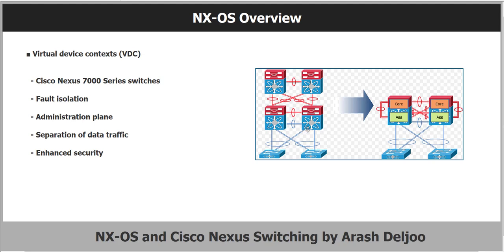Here you can see that instead of using two physical switches in the core layer and two physical switches in the distribution layer, we can use only two physical switches. Inside each physical switch, we can have two virtual devices — an aggregation device representing the distribution layer switch, and a core device. So in one physical device, we have two layers: the aggregation layer and the core layer. This is the Virtual Device Context, or VDC.